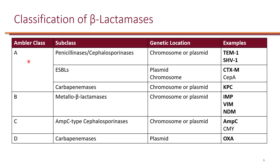There are different ways to classify beta-lactamases. The easiest is the Ambler classification: classes A, B, C, and D. Class B is metallo-beta-lactamase, while classes A, C, and D have a serine moiety. Class A includes penicillinases and cephalosporinases such as TEM-1 and SHV-1, which break down penicillins as well as first and second generation cephalosporins. These are sometimes referred to as narrow-spectrum beta-lactamases.